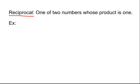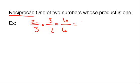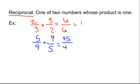Write that down, and then I'll write an example of what that actually means. For example, two-thirds and three-halves are reciprocals. All we did is take the two-thirds and flip it. When you multiply them, you get two times three is six, three times two is six, and six divided by six is one. Another example is five-ninths, and the reciprocal would be nine-fifths, because all we did is flip these upside down. Five times nine is forty-five, nine times five is forty-five, and forty-five divided by forty-five is one.